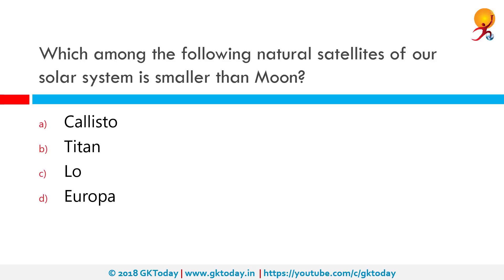Which among the following natural satellites of our solar system is smaller than the Moon? The correct answer is Europa. Europa is the smallest of the four Galilean moons orbiting Jupiter and the sixth largest moon in the solar system. Europa was discovered in 1610 by Galileo Galilei and was named after Europa, the mythological mother of King Minos of Crete and the lover of Zeus.